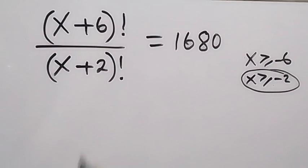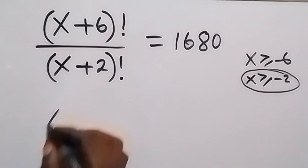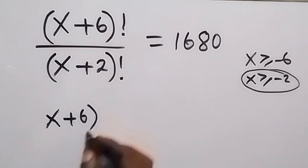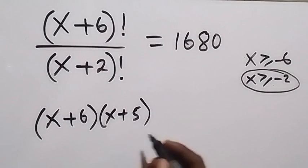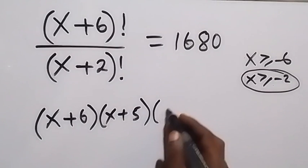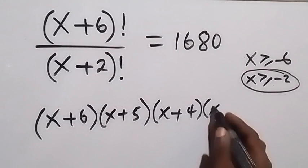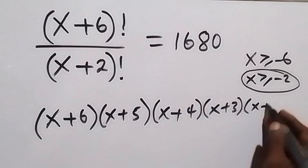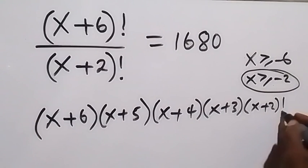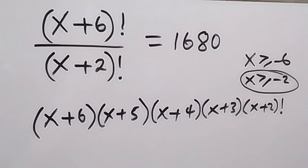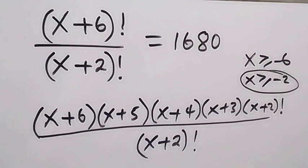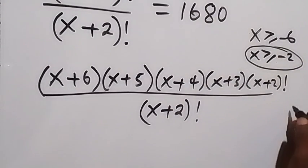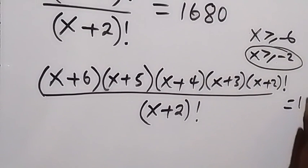From here, we expand (x+6)! as (x+6) multiplied by (x+5), subtracting one each time, giving (x+4), then (x+3), then (x+2)!, and we stop there. This is divided by (x+2)!, so the (x+2)! terms cancel each other. Don't forget this equals 1680.